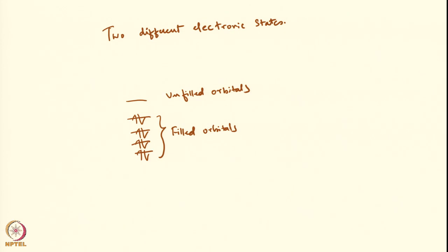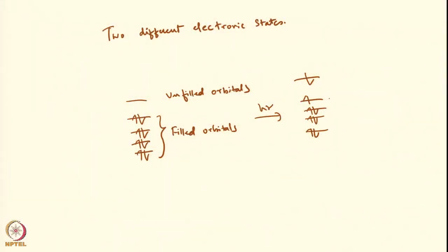By applying energy or introducing a photon — in the presence of h-nu — I can promote an electron from the highest occupied molecular orbital to the lowest unoccupied molecular orbital. So this is what we call HOMO and this is LUMO. One can also go to LUMO plus one or higher energy levels. So one can always excite to various levels, but the HOMO to LUMO transition is the lowest energy transition. What I am doing is promoting an electron from an occupied level to an unoccupied level — that is the electronic transition.